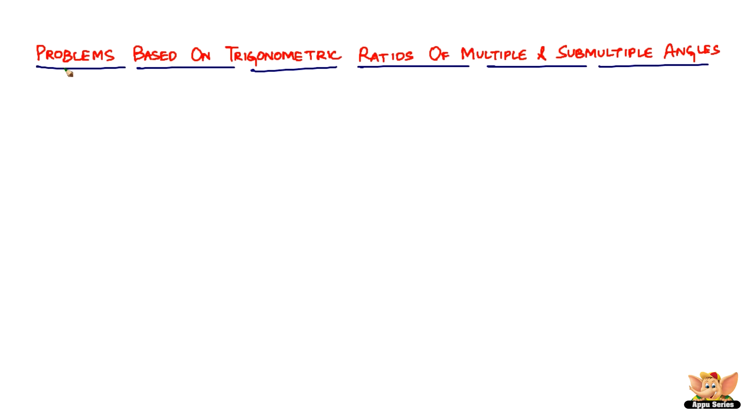In this video, let us continue to solve more problems based on trigonometric ratios of multiple and submultiple angles. Here we've got a question which reads: prove that cos²a + cos²(a + π/3) + cos²(a - π/3) equals 3/2.